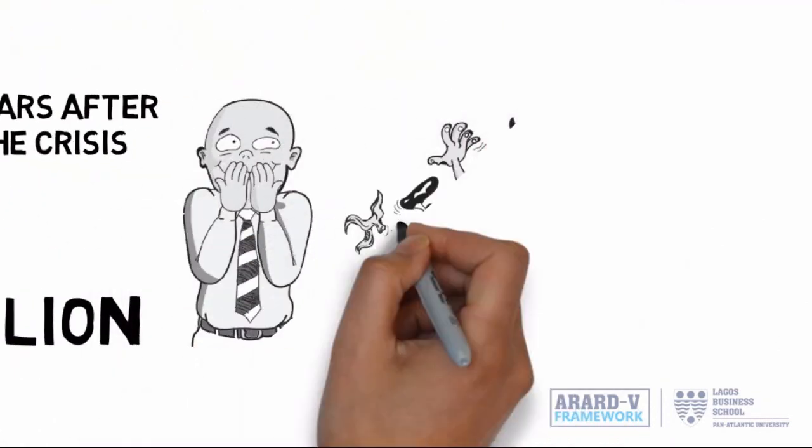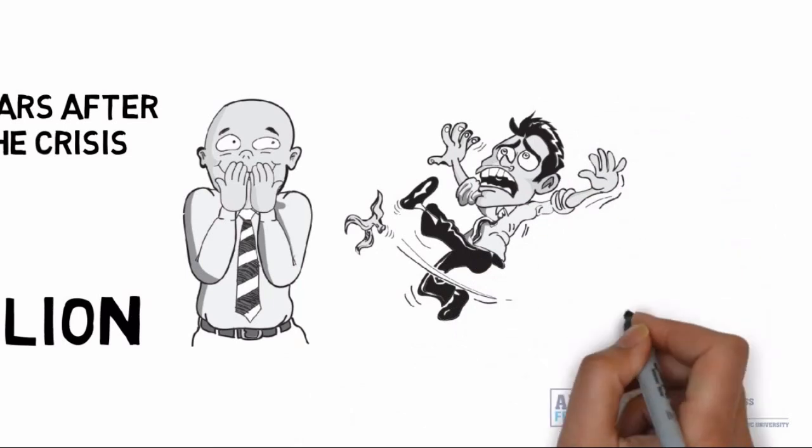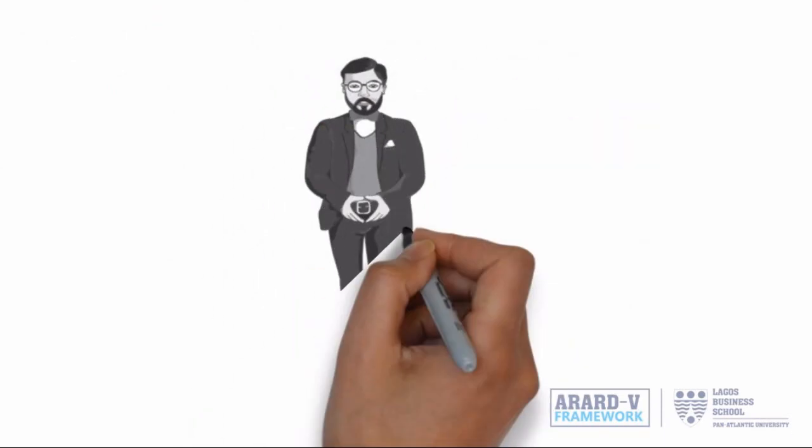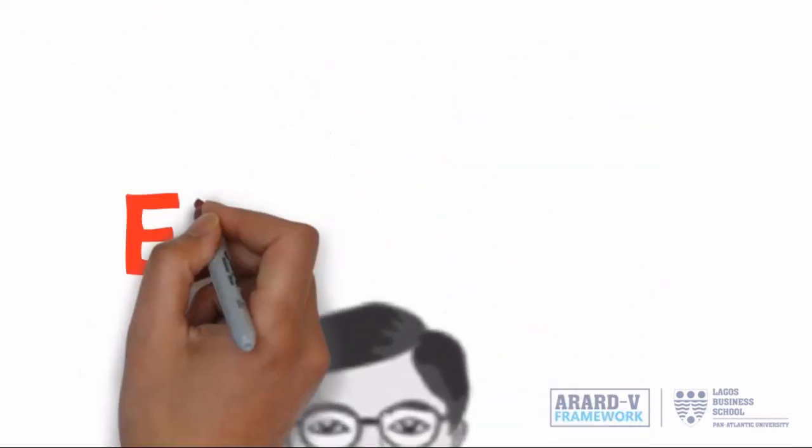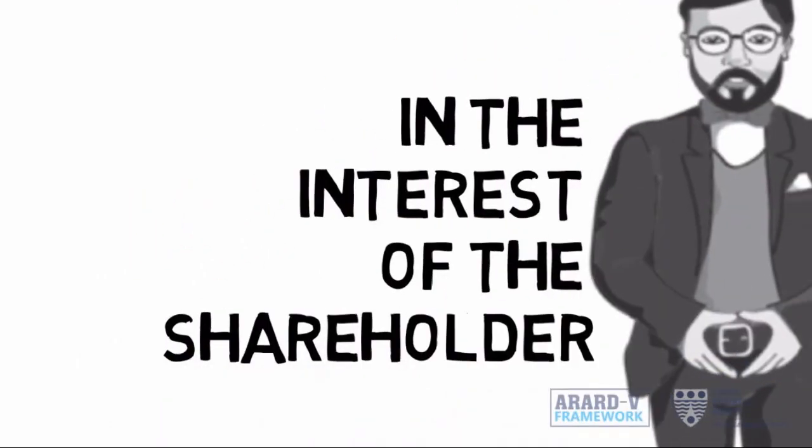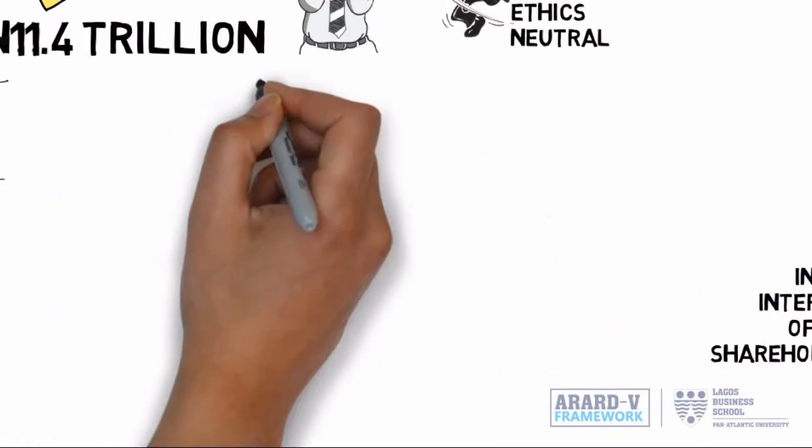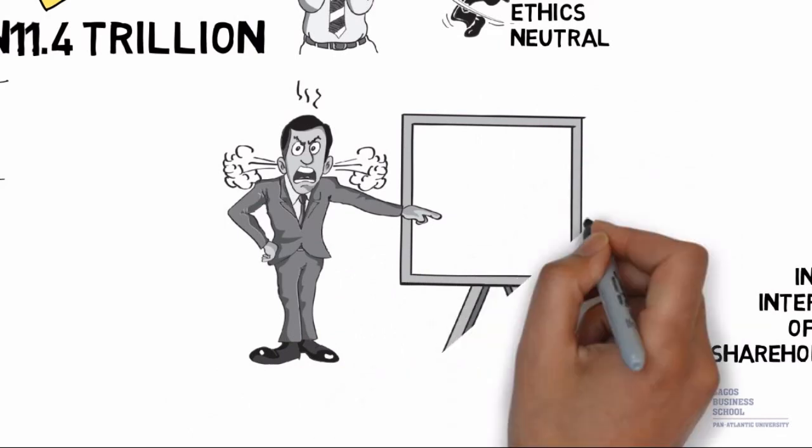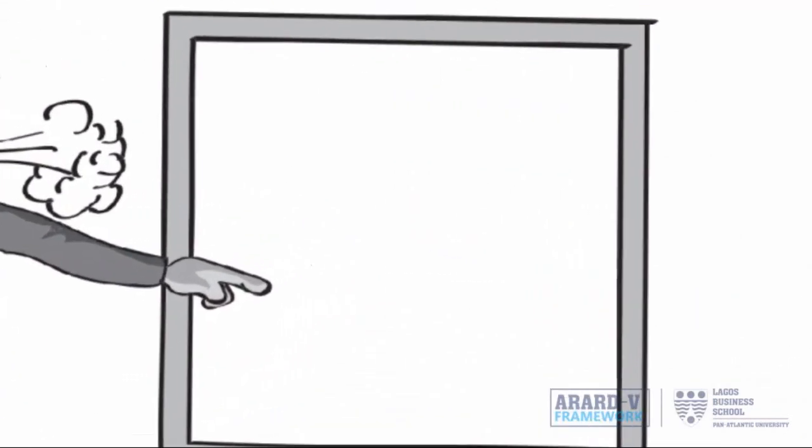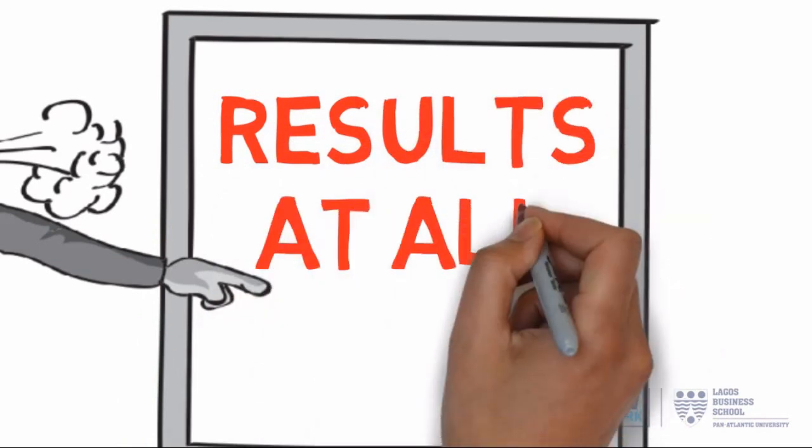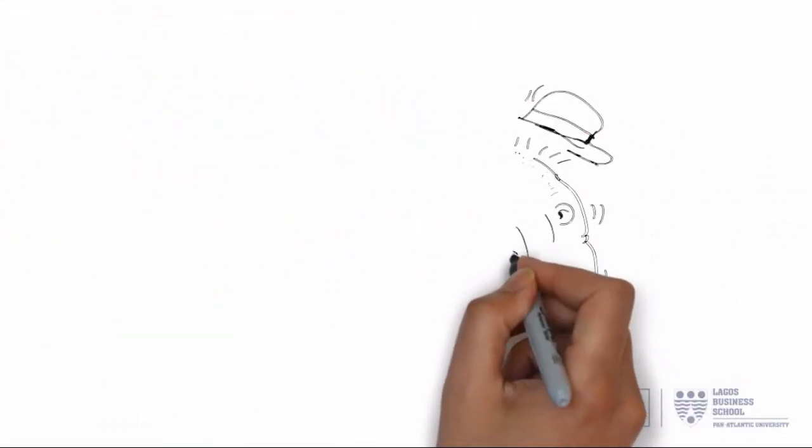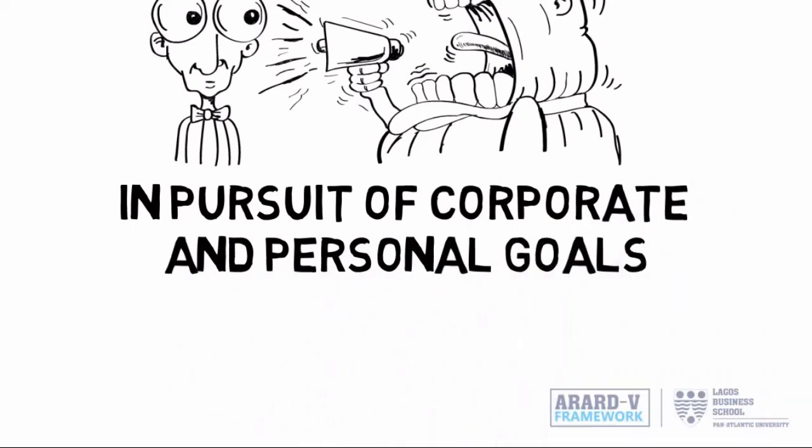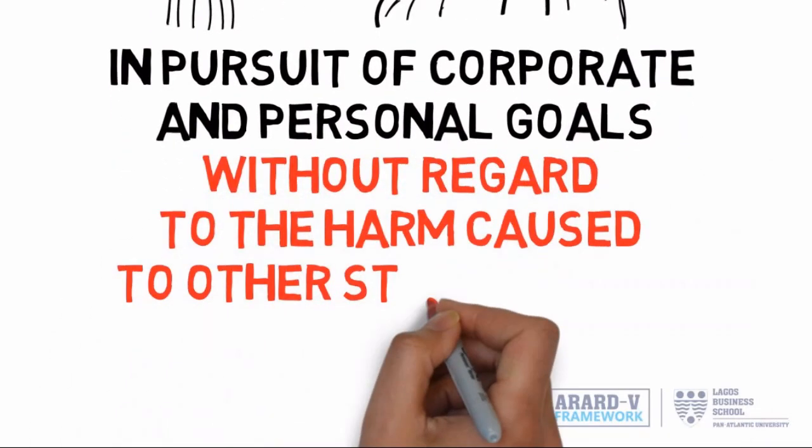Finance practitioners have very often acted in a way that suggests that finance is ethics neutral. As fiduciaries, opportunities exist for the finance decision maker to either act ethically in the interest of the shareholder or in his own narrow interest. Extending this argument, the decision maker may be working within an organizational culture that overtly or covertly promotes the achievement of results as an end worthy of pursuit without regards to the means. This puts considerable pressure on the decision maker to act in an unethical manner in pursuit of corporate and personal goals, without regard to the harm caused to other stakeholders.